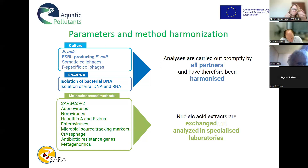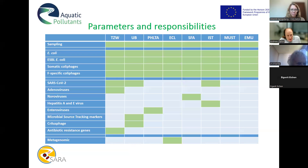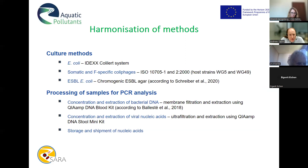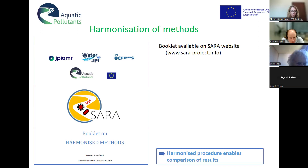The nucleic acids can then be sent to specific partner laboratories specialized in particular parameters — adenoviruses, noroviruses, hepatitis, enteroviruses, microbial source tracking markers, antibiotic resistant genes, and metagenomics. It is easy to exchange and store nucleic acids, so we have truly comparable data. The analysis responsibilities are illustrated here: all partners do cultivation tests and sampling/extraction, and specific laboratories analyze all samples from the different countries.